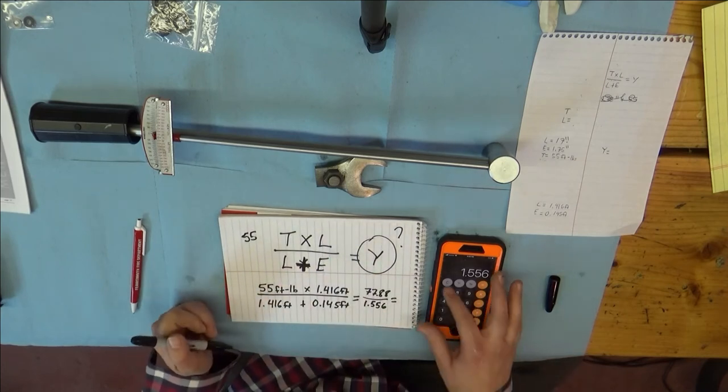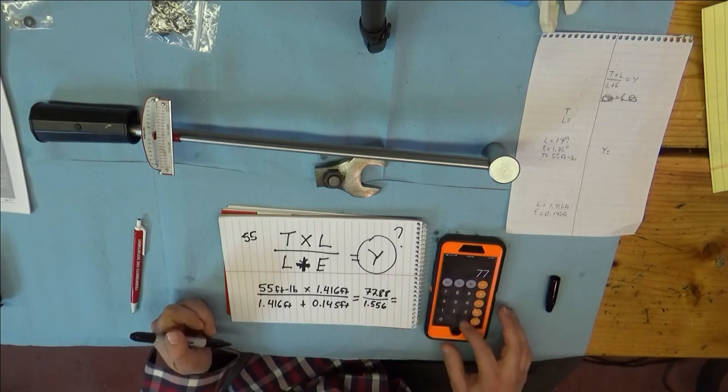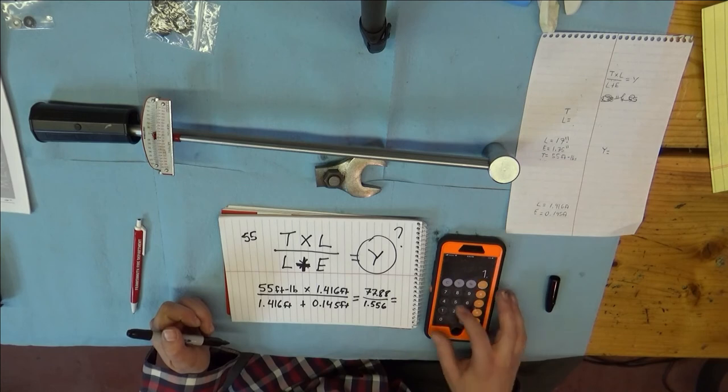Almost there. Now 77.88 divided by 1.556, 50.